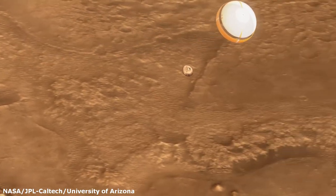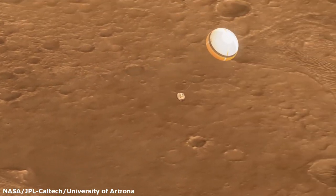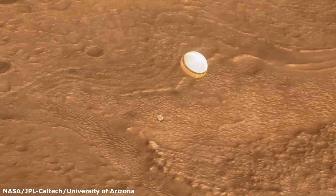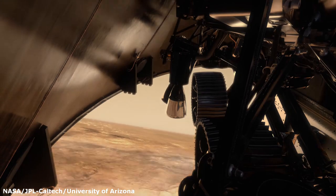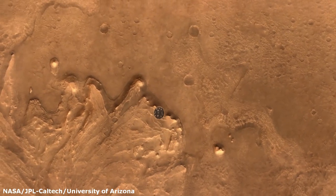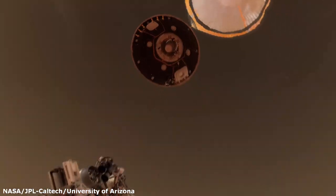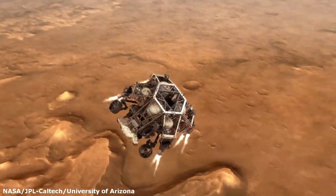The parachute will reduce the speed to 520 kilometers an hour when it will be time to deploy the heat shield. With the heat shield out of the way, the instruments can take measurements and calculate where the optimal landing site will be. Within less than a minute, a solution is found and the landing site is decided.